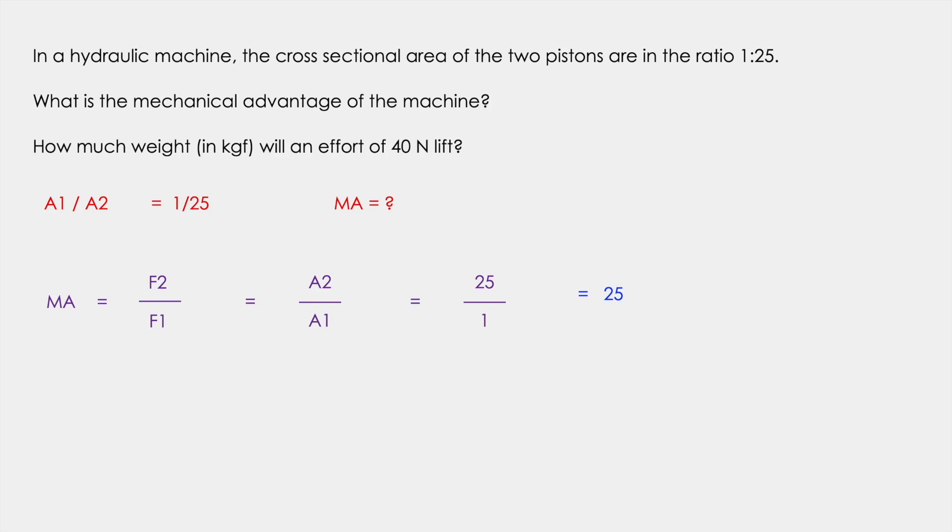Now from the above formula of mechanical advantage, if we make F2 as the subject, then F2 would be equal to MA multiplied by F1. MA is 25, F1 is 40 Newton. So we get F2 as 1000 Newton.